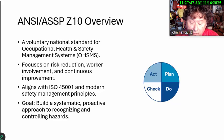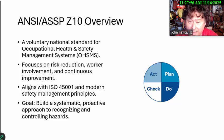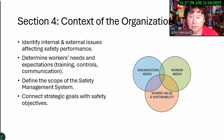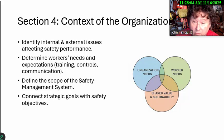The goal is a systematic, proactive approach to recognizing and controlling hazards, built around Deming's Plan, Do, Check, and Act cycle. In the context of the organization, it identifies any internal or external issues affecting safety performance.